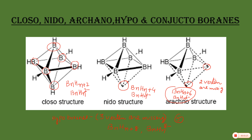The last one is Conjuncto boranes — that is the fourth type being Hypho borane and fifth being Conjuncto boranes. These types of boranes are generally formed from any two types of boranes, whether it is Closo, Nido, or Arachno structure.